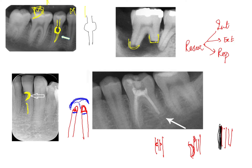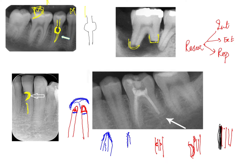A lot of external root resorptions that occur at the apex — especially in anterior teeth due to trauma — show a characteristic radiographic appearance where you have one side of the root, another area of the root, and the pulpal canal system visible. This type of resorption is called a pencil-shaped deformity.